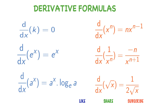Derivative of root x is 1 divided by 2 root x. This can also be derived from derivative of x power n, but we use it very frequently so we take it as a formula. The last three formulas we learned — derivative of x power n, derivative of 1 divided by x power n, and derivative of root x — are similar formulas. With a little bit of practice you can learn these things very easily. Derivative of x power n is n into x power n minus 1. Derivative of root x is 1 divided by 2 root x.